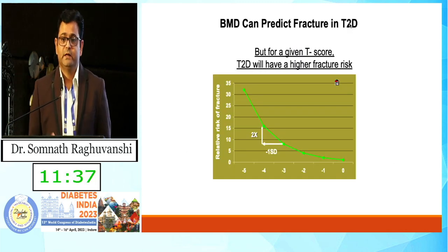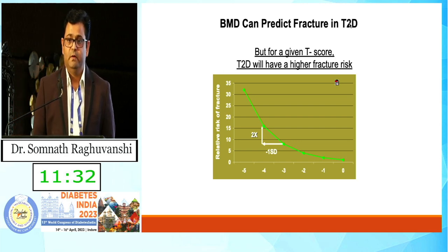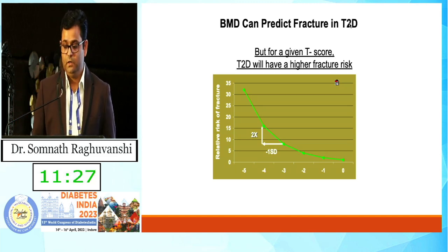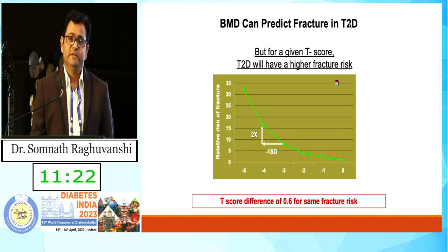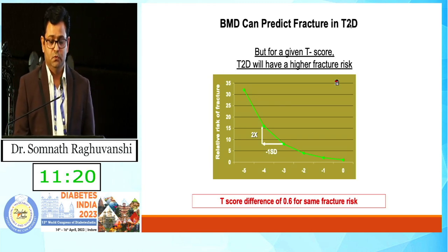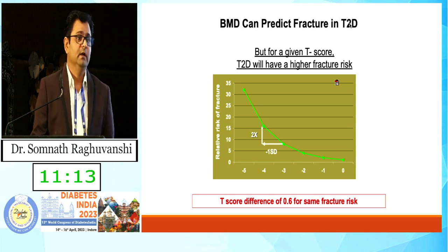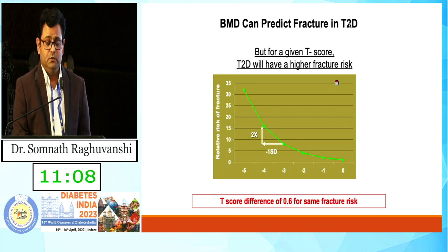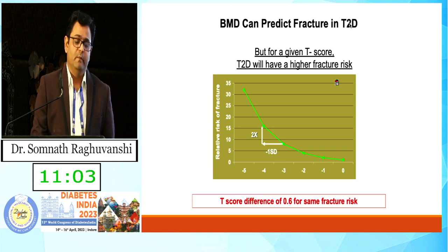What should be the exact T-score difference in diabetes? When we analyze data for a patient with diabetes, I think the difference should be 0.6. A patient with a T-score of minus 2.0 — where osteoporosis threshold is minus 2.5 — should actually be considered as minus 2.6 in a diabetes patient. Patients have similar fracture risk at a higher BMD, so this should always be considered and we should start preventive therapies in patients with diabetes.